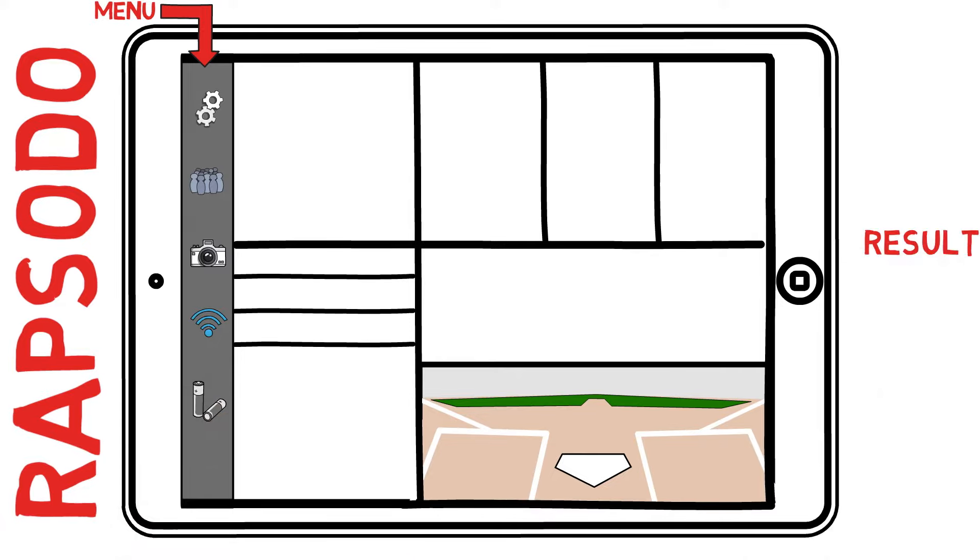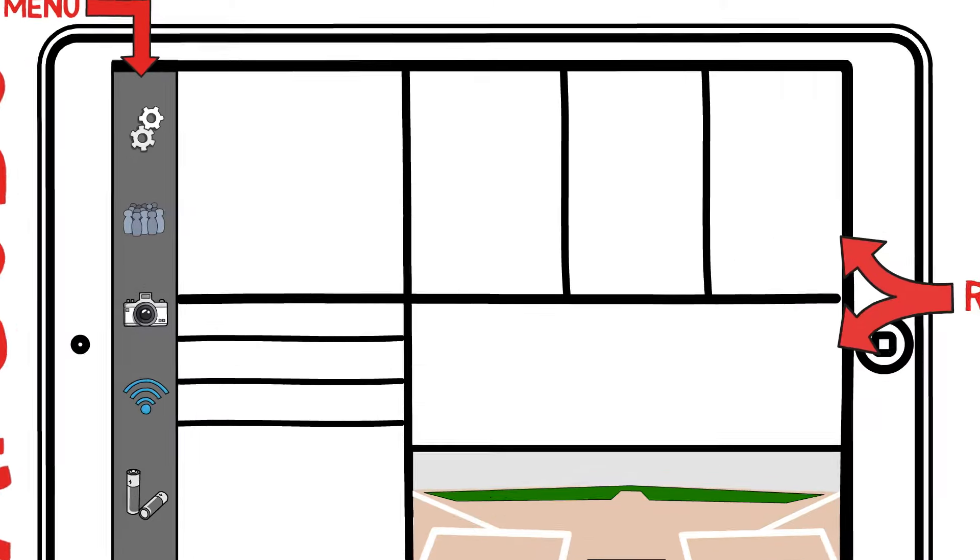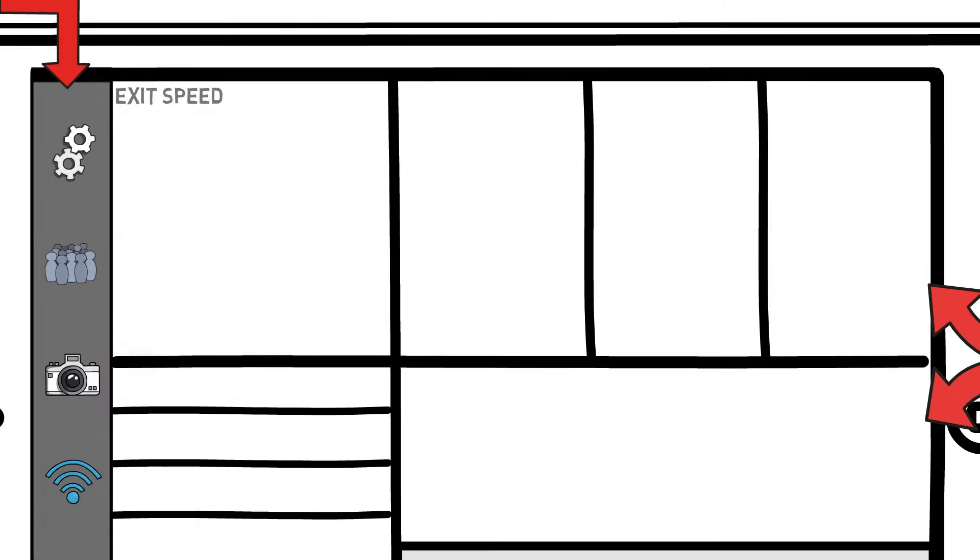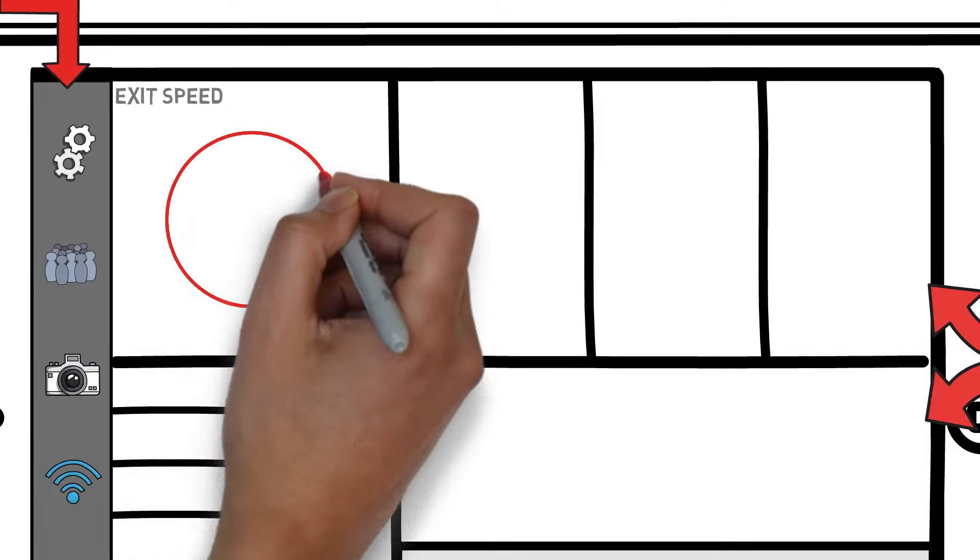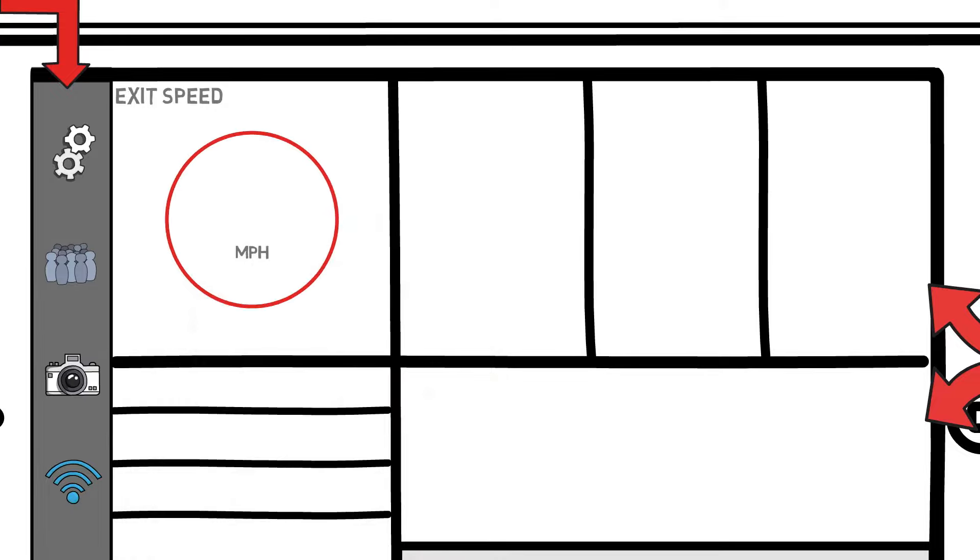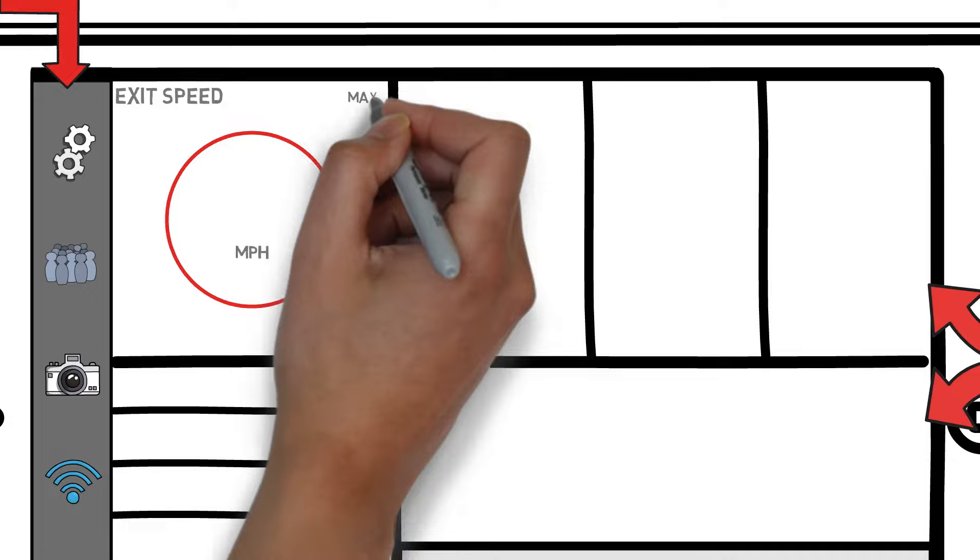Next we'll start looking into the fun stuff, the areas I've labeled the results tab. This info takes up the majority of the screen because it's the most important information to track. Starting in the top left, we have our exit velocity tab, that gives you the output for the most recent hit as well as your maximum and average for the current session.